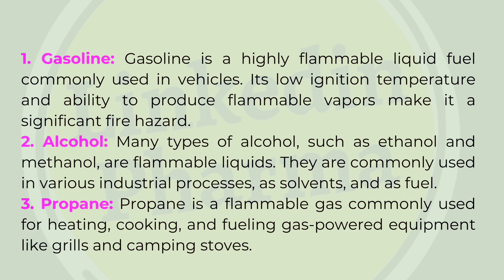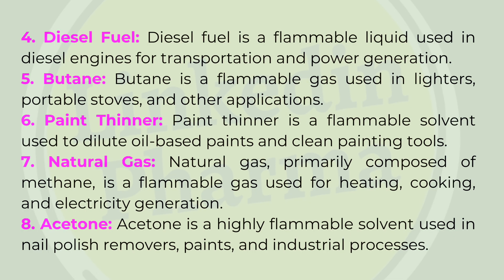2. Alcohol — many types of alcohol, such as ethanol and methanol, are flammable liquids commonly used in industrial processes, as solvents, and as fuel. 3. Propane — a flammable gas commonly used for heating, cooking, and fueling gas-powered equipment like grills and camping stoves. 4. Diesel fuel — a flammable liquid used in diesel engines for transportation and power generation. 5. Butane — a flammable gas used in lighters, portable stoves, and other applications. 6. Paint thinner — a flammable solvent used to dilute oil-based paints and clean painting tools.